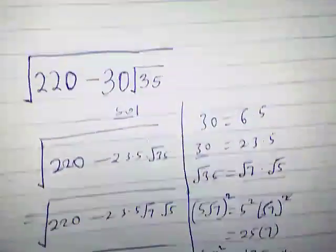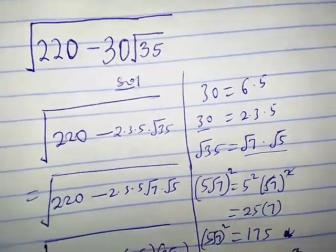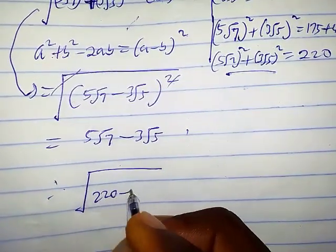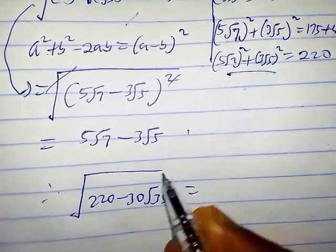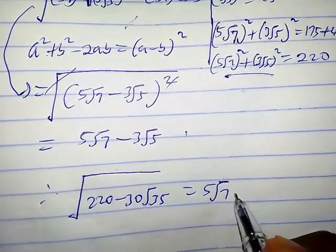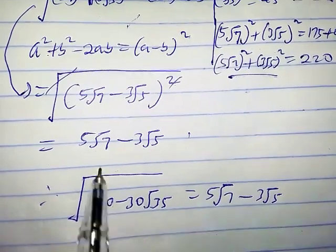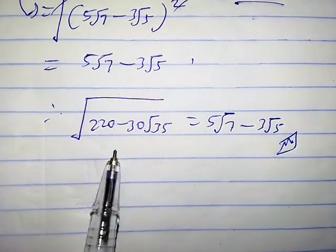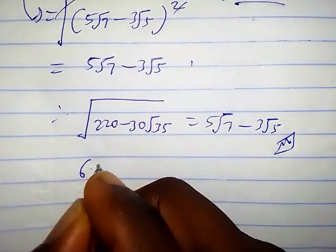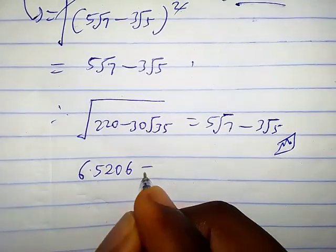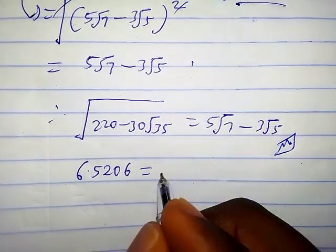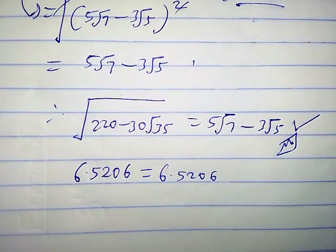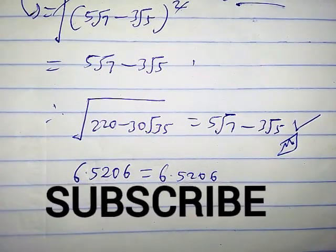Therefore, the original expression square root of 220 minus 30 times square root of 35 equals 5√7 minus 3√5. You can verify this: plugging both sides into a calculator gives approximately 6.5206, confirming this is the required solution. Thanks for watching — consider hitting the subscribe button if you haven't. Peace.